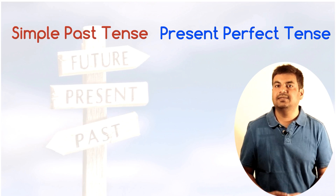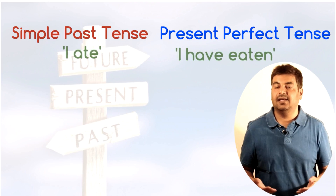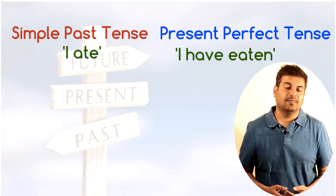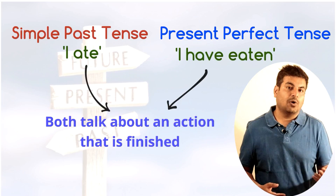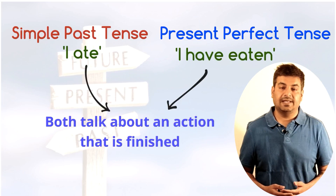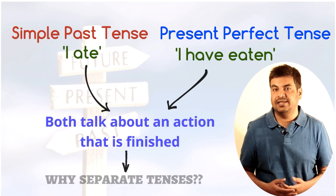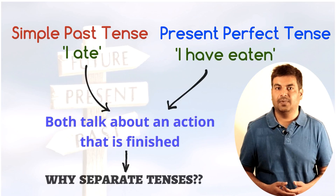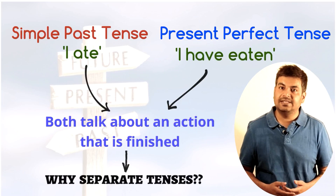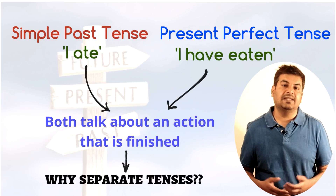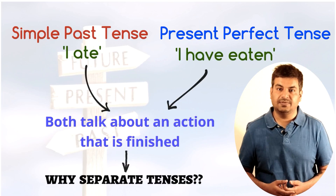Look at the sentences 'I ate' and 'I have eaten.' Both talk about an action that is finished, so why use separate tenses for them? The difference lies in what the sentences are trying to say.